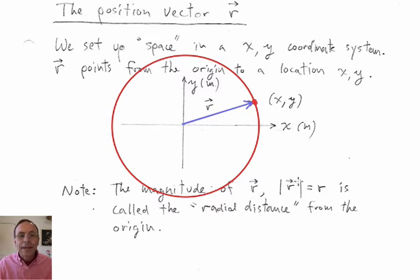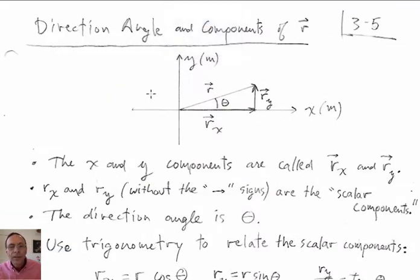And yeah, is the magnitude of r is known or is called the radial distance from the origin. Okay, so now let's talk about the properties of r. So here is my position vector r. And the x and y components of r are called rx and ry. So here is rx pointing to the right.